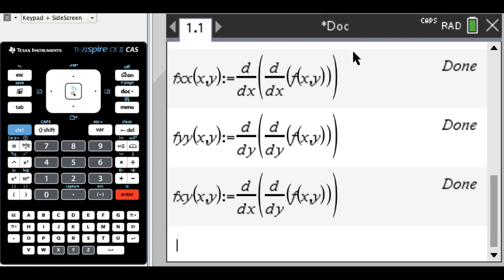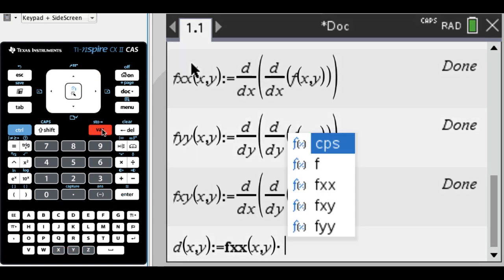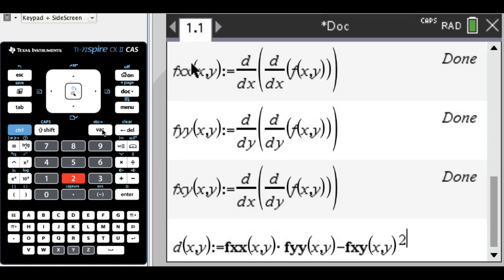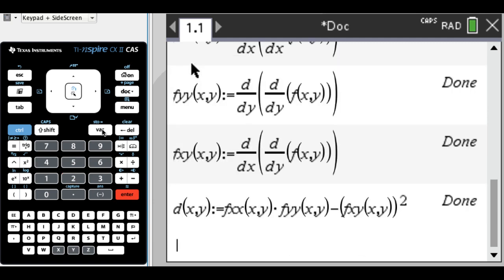So the reason I did that is that I actually want to define a function that uses all of these. So I'm going to define a function called d, because we're going to use the second partial derivatives test, d of x, y, and then that is f x, x of x, y times f y, y of x, y minus f x, y of x, y squared. You could also put that in as a determinant if you prefer. I think it's easier to just type this in. All right. So we have this.